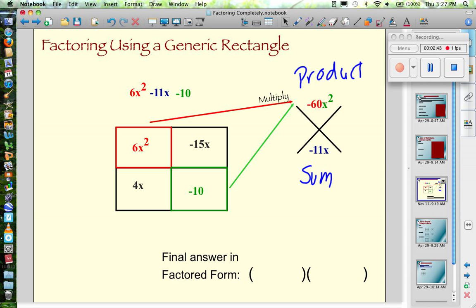I need to find out what the outside is. So I'm going to look at only the top row. I'm looking at only the top row and I want to know what the greatest common factor of 6x squared and 15x is.